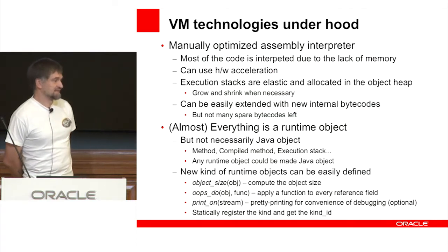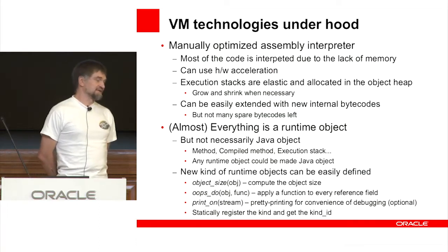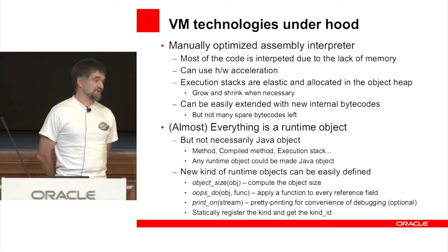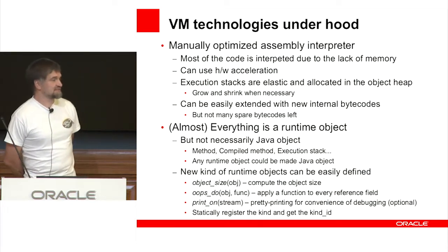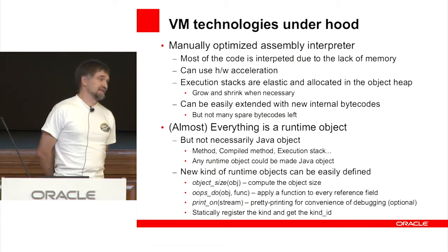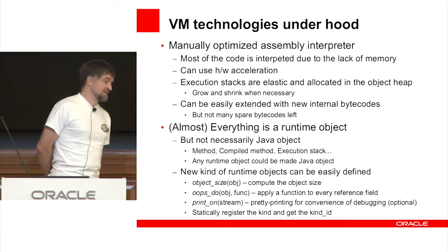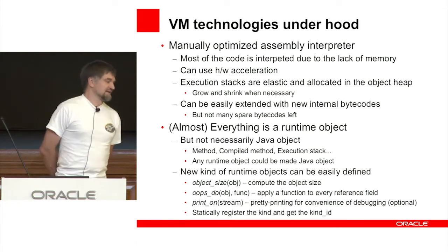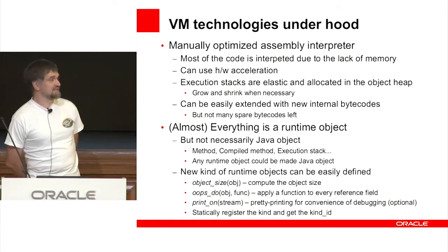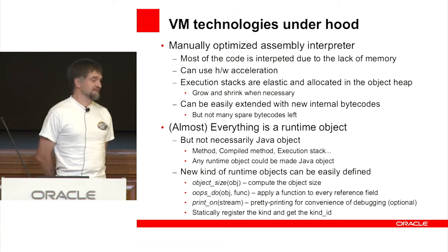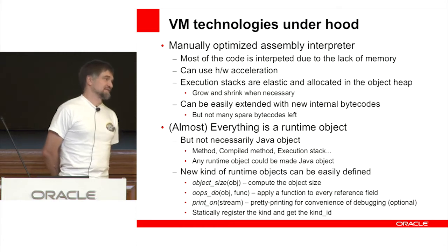It's very easy in this runtime to define new kinds of runtime objects — they can have any representation. To define a new kind, you need two functions and one optional but convenient one. Required functions are object size — given an object address, compute its size — and oops_do, where you pass an object address and a function that must be applied to every reference field of that object. The optional function is print_on_stream, for pretty-printing useful during debugging.